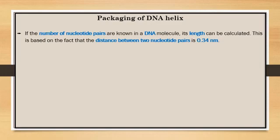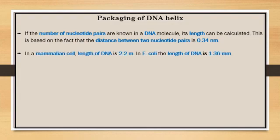In a typical mammalian cell, the length of DNA is 2.2 meters. The length of DNA in bacteria is just 1.36 millimeters. But whatever the length, the question is how many nucleotide pairs are there.